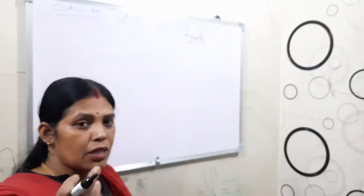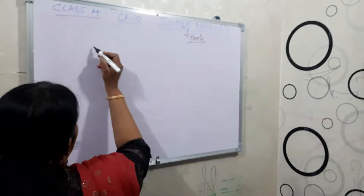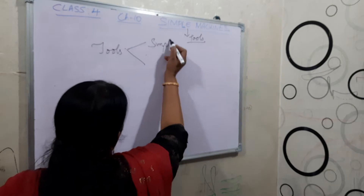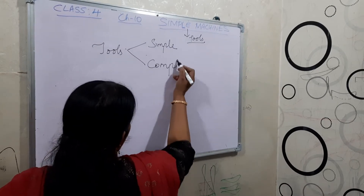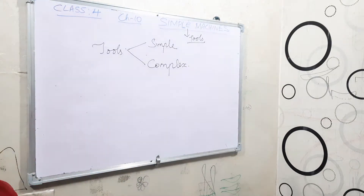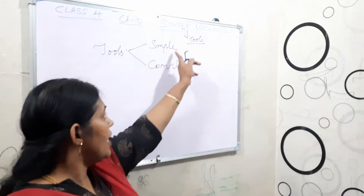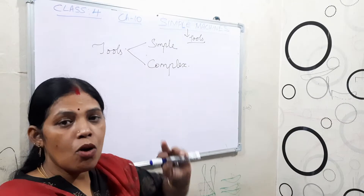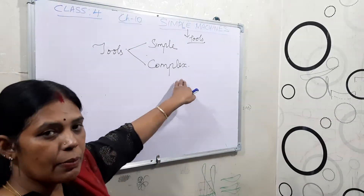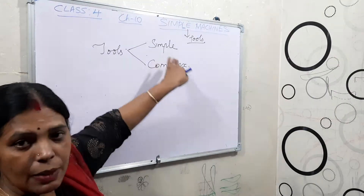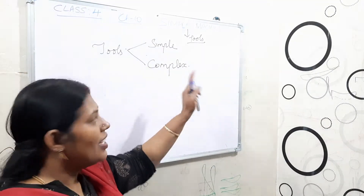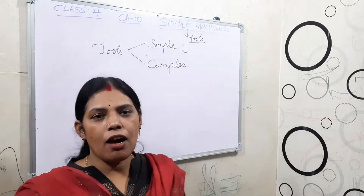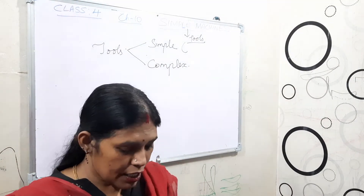The tools are of two types. One is simple and another one is complex. The simple tools they are the simple machines — they are simple in structure also. Complex machines means a number of simple machines are attached together. In simple machines there is no need of electricity.